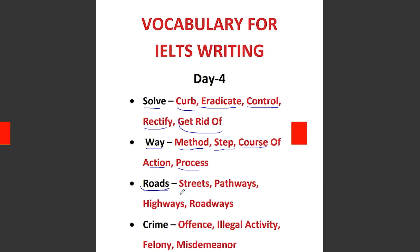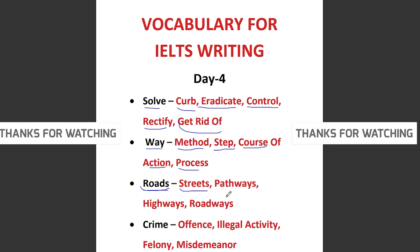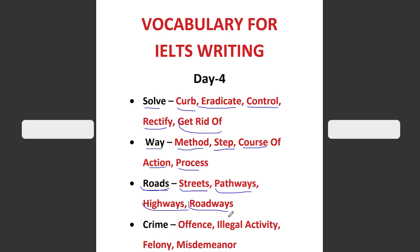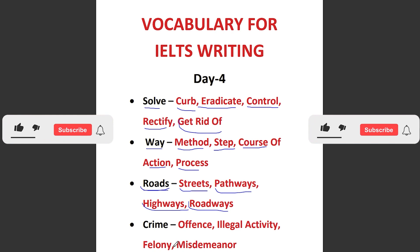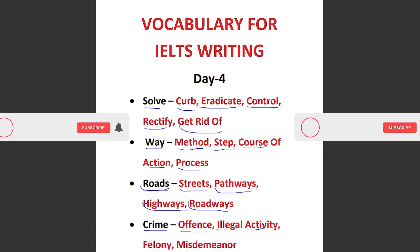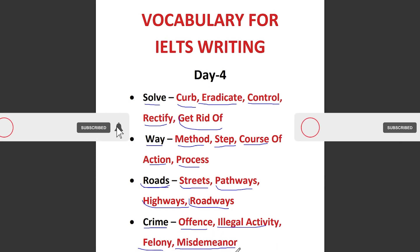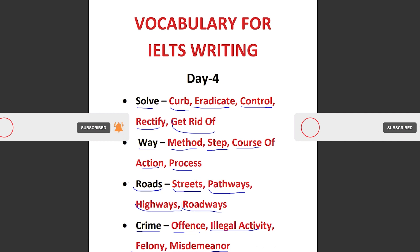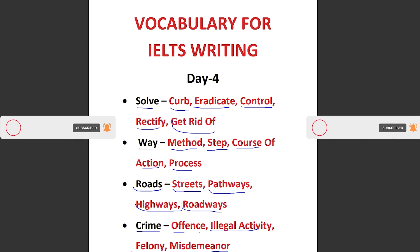The next word is 'roads.' Instead of roads, you can write: streets, pathways, highways, or roadways. The next word is 'crime,' which is very commonly used in task two. Instead of crime, you can write: offense, illegal activity, felony, or misdemeanor.